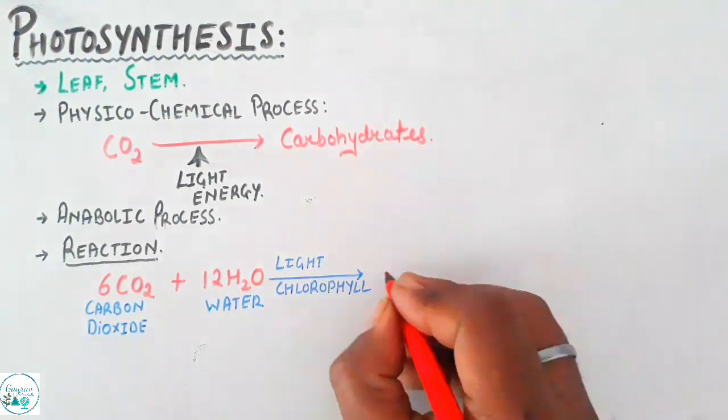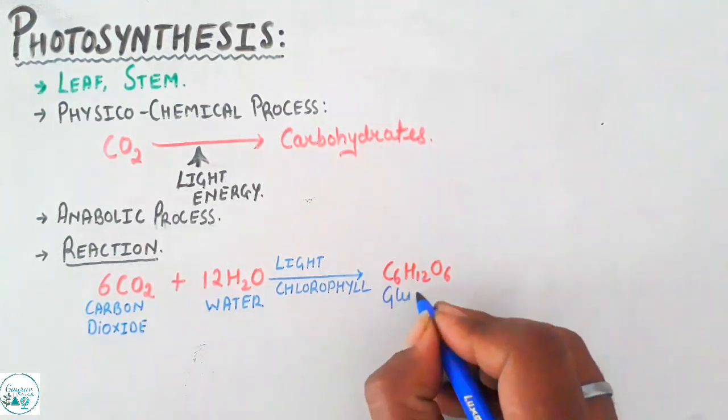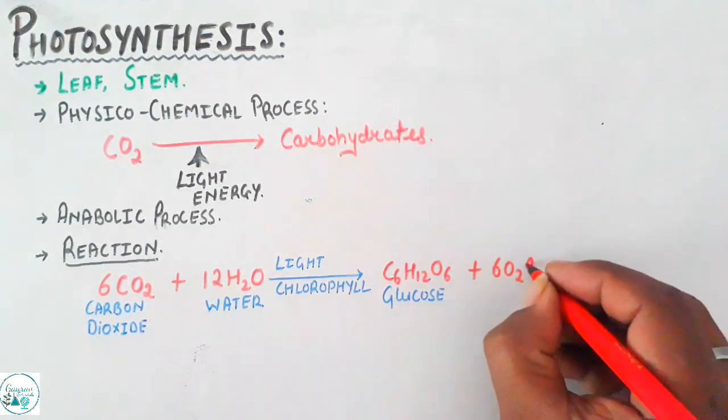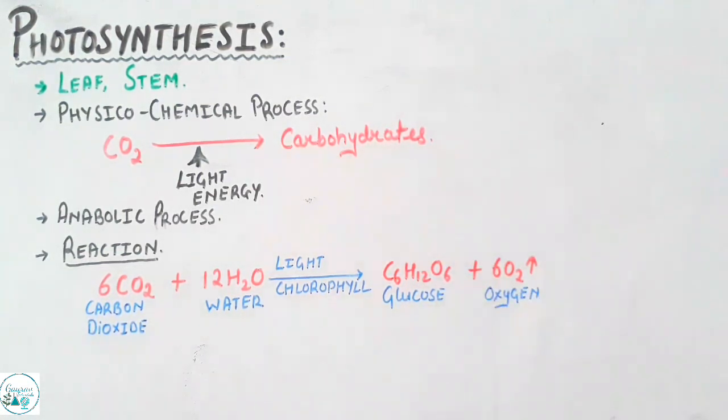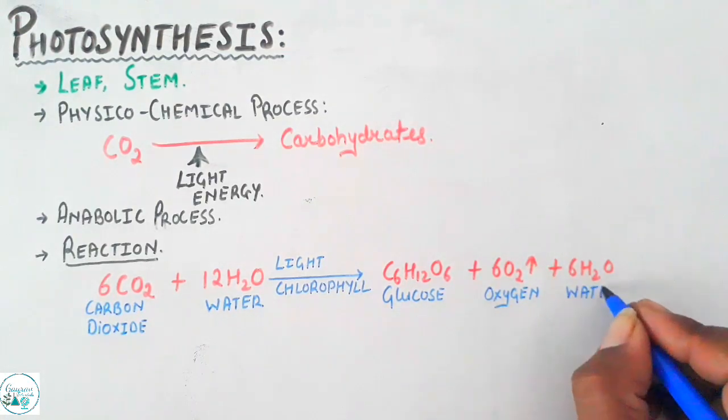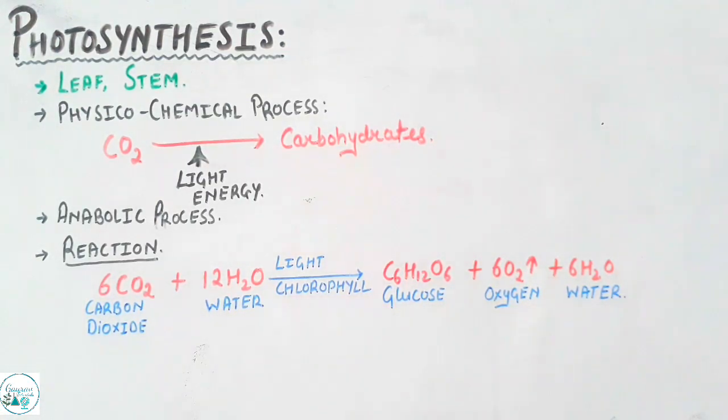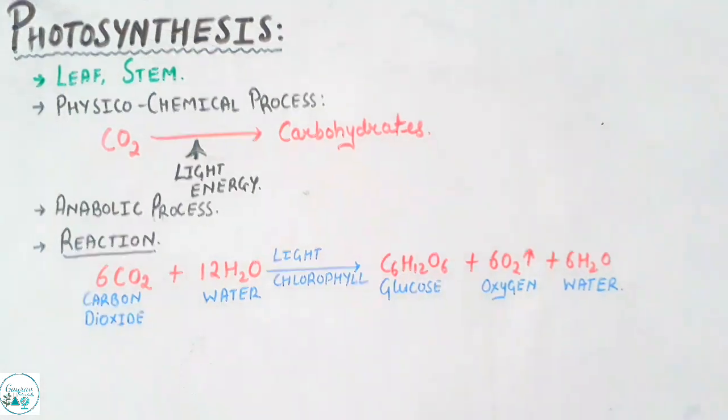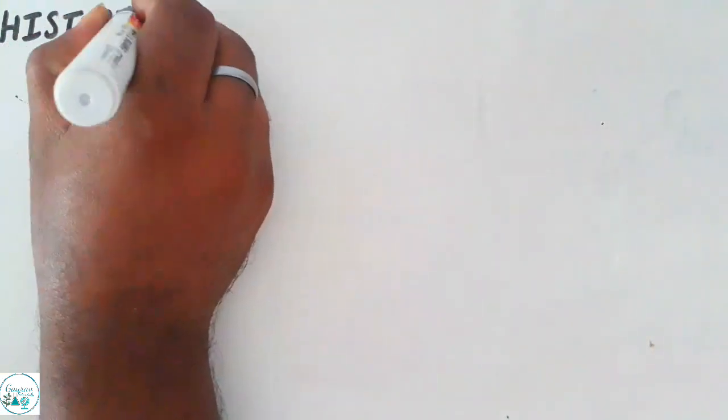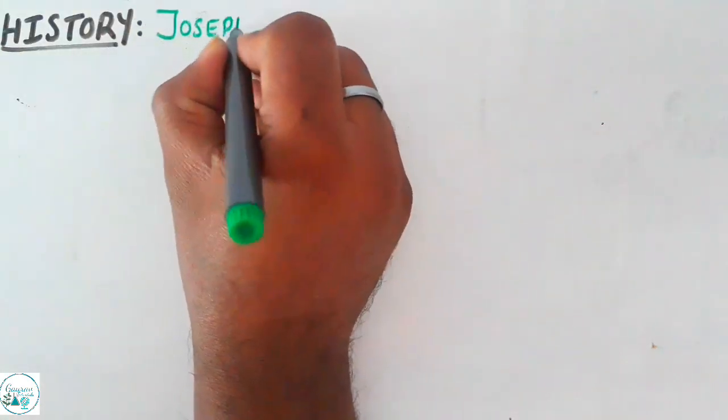We find the product formed as glucose along with six molecules of oxygen and six molecules of water. The reactants are simpler whereas the product is complex, hence it is called an anabolic process. Let us now try to understand the history of photosynthesis. The major emphasis would be paid on this in the video.